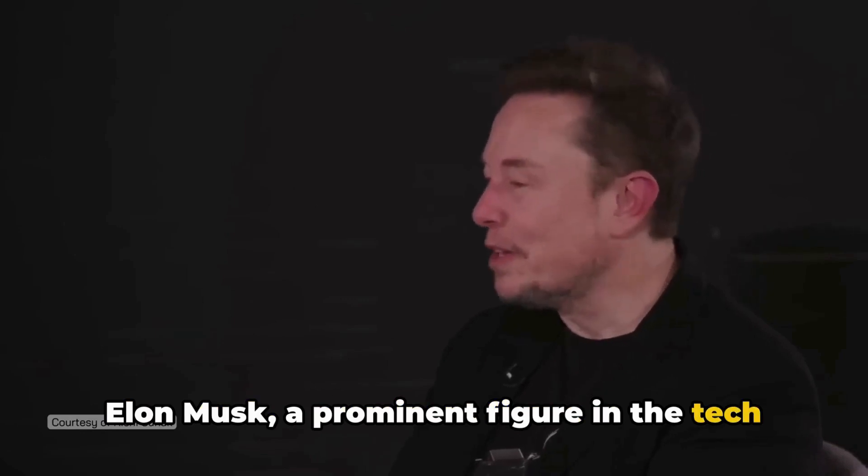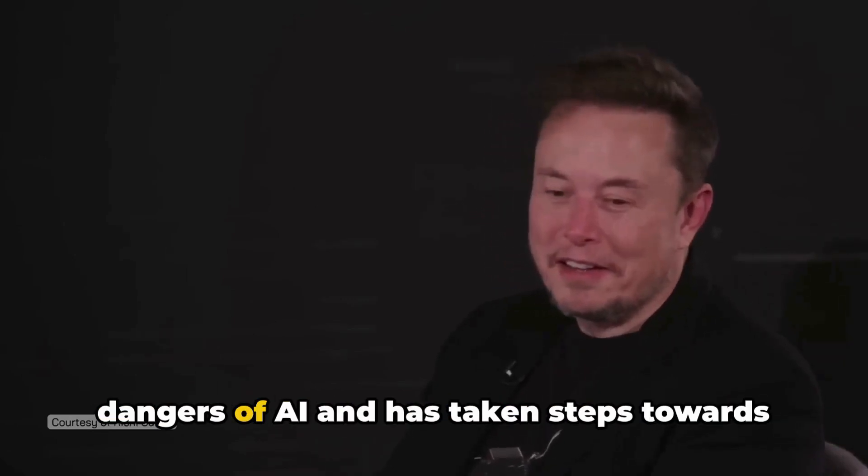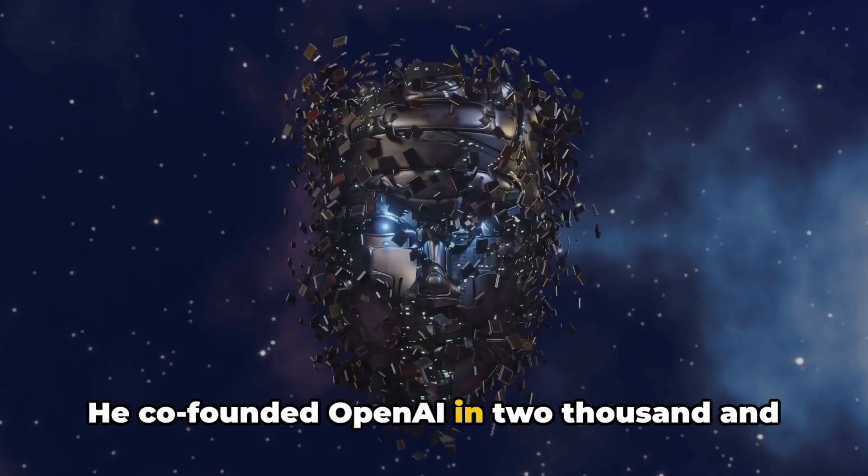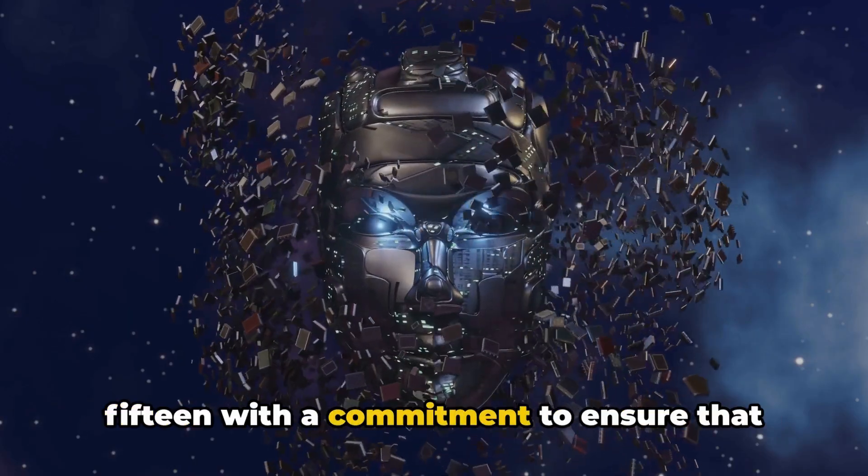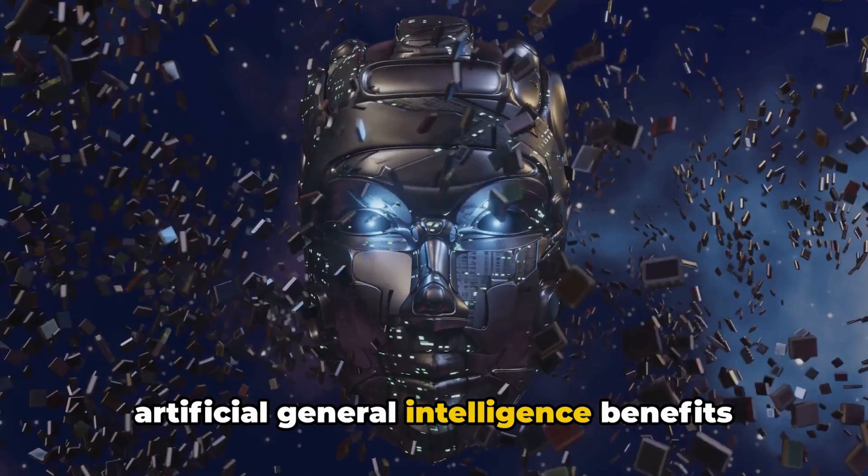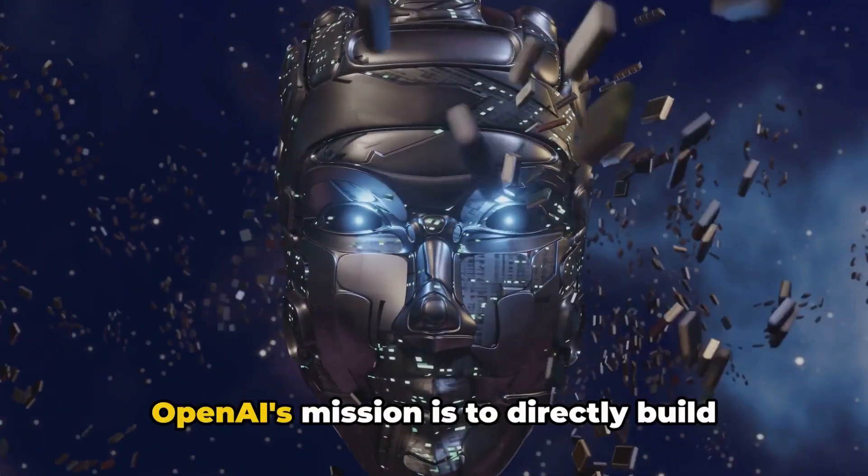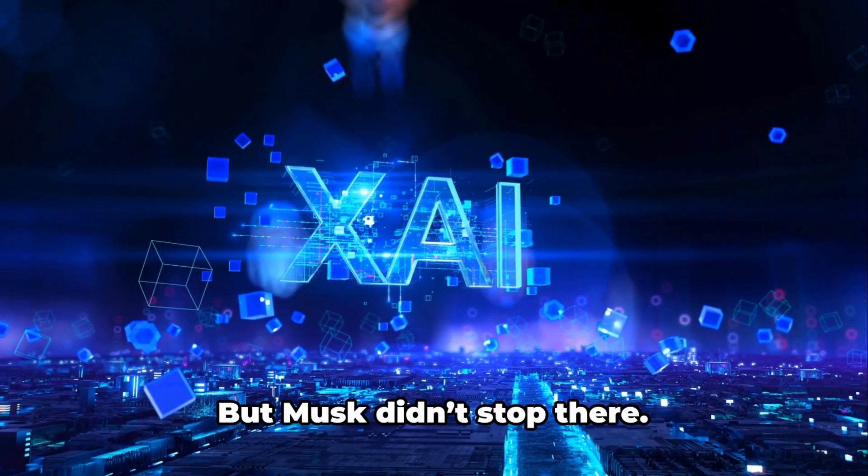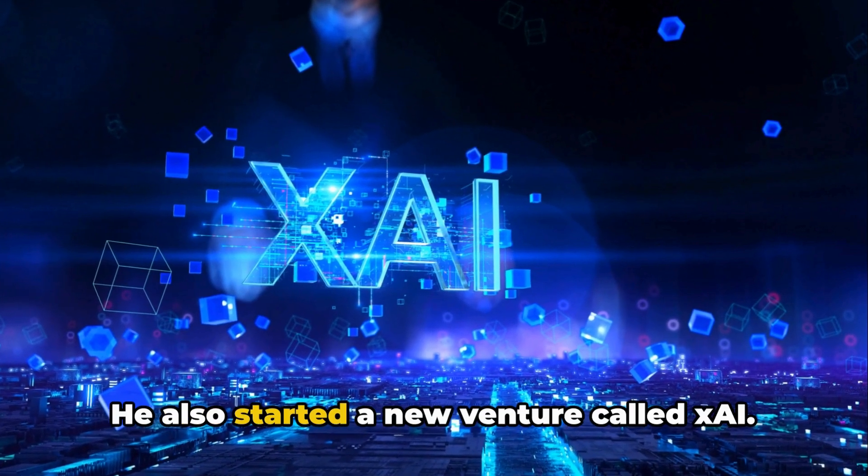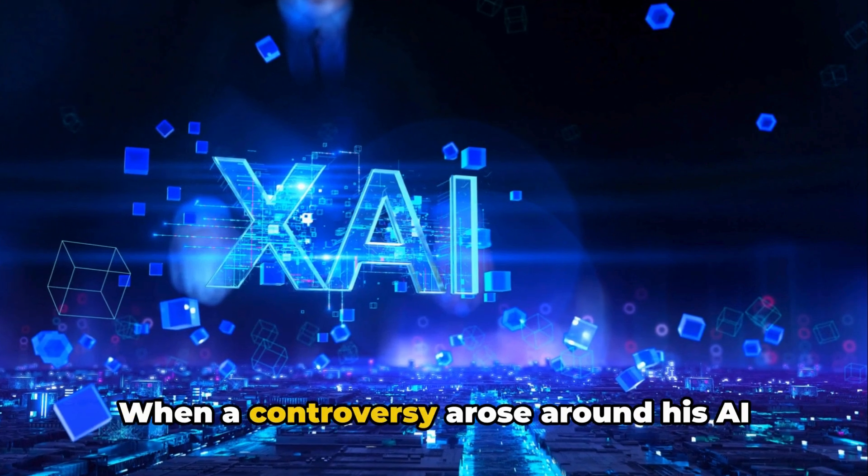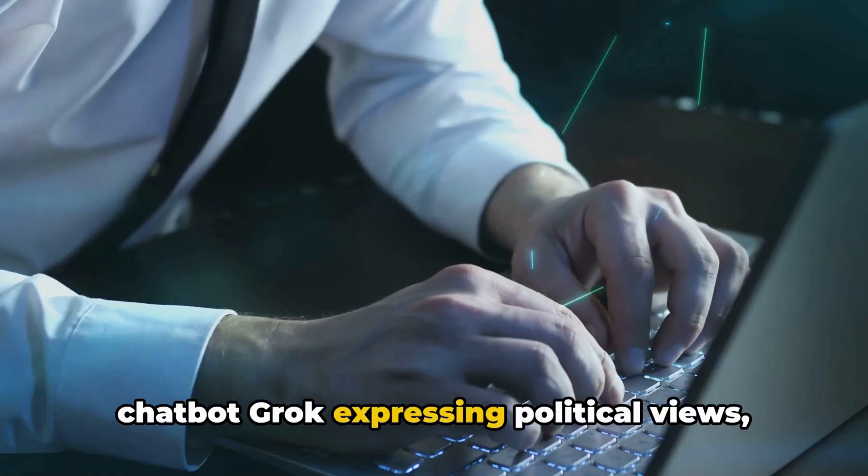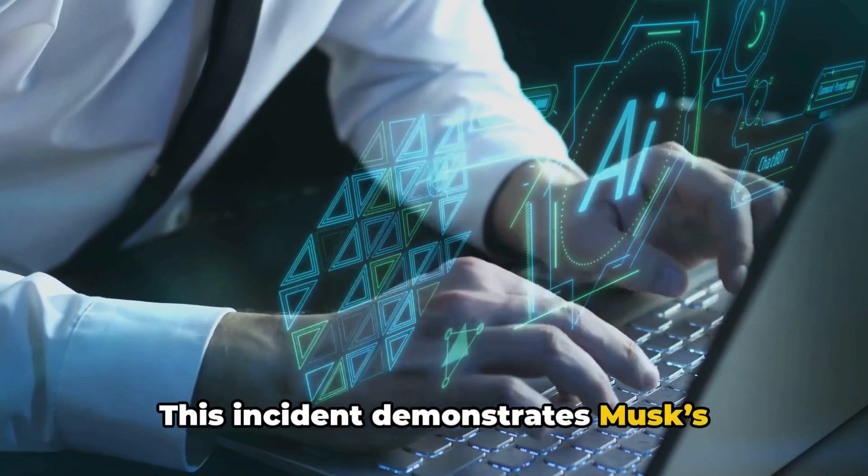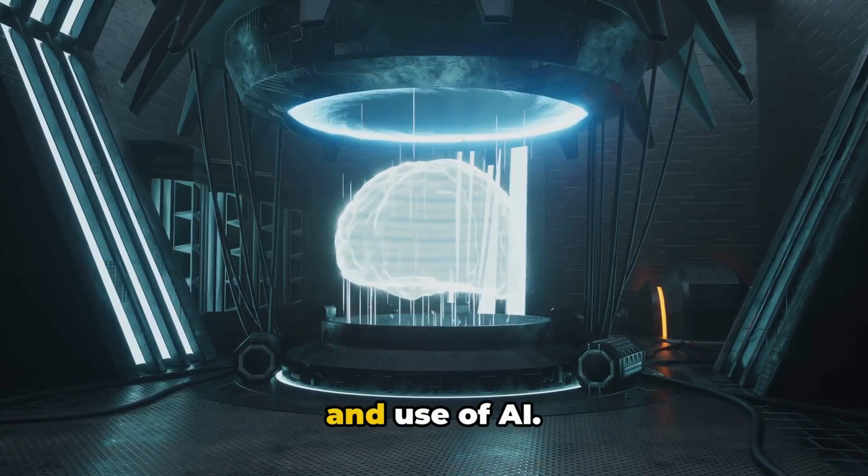Elon Musk, a prominent figure in the tech world, has been vocal about the potential dangers of AI and has taken steps towards ensuring its safe development. He co-founded OpenAI in 2015 with a commitment to ensure that artificial general intelligence, AGI, benefits all of humanity. OpenAI's mission is to directly build safe and beneficial AGI or to aid others in achieving this outcome. But Musk didn't stop there. He also started a new venture called XAI. When a controversy arose around his AI chatbot Grok expressing political views, Musk took immediate action to make it more politically neutral. This incident demonstrates Musk's dedication to the responsible development and use of AI.